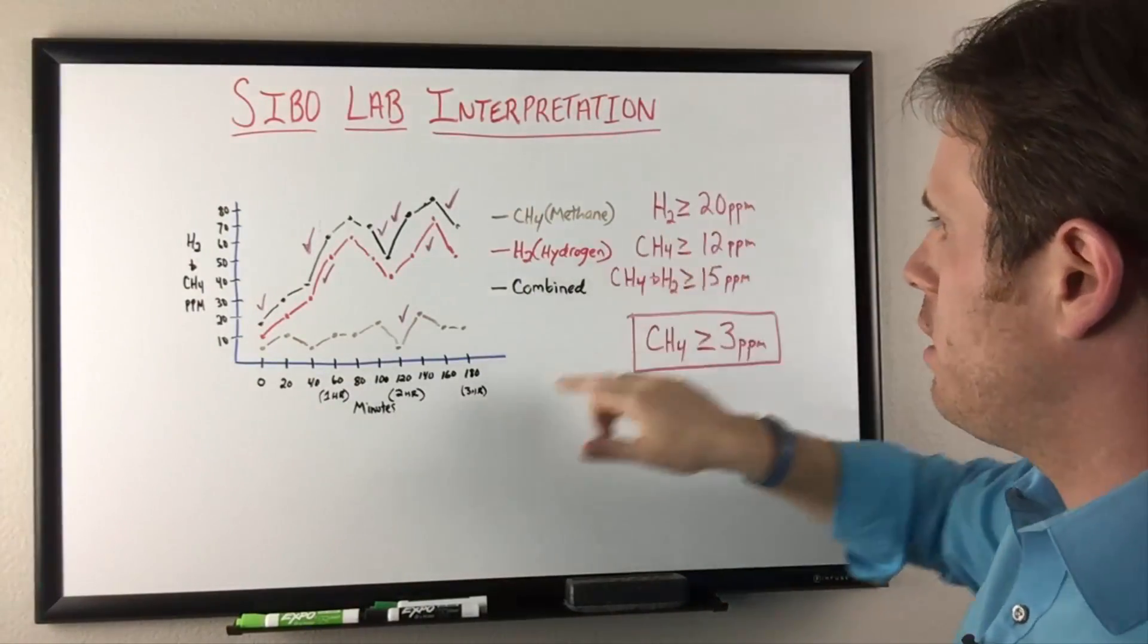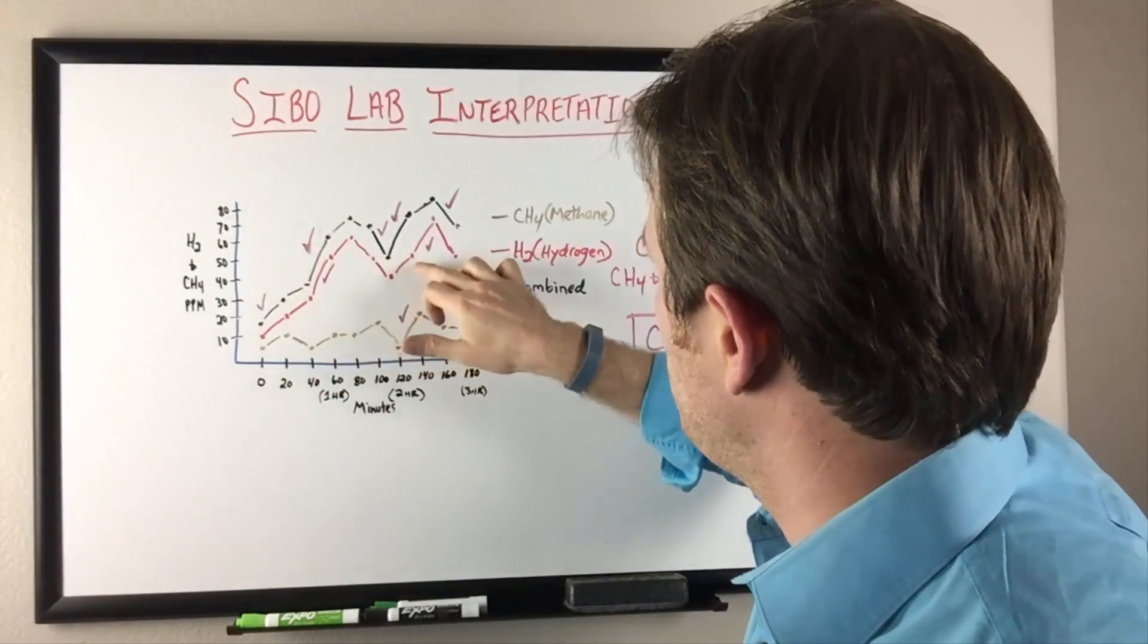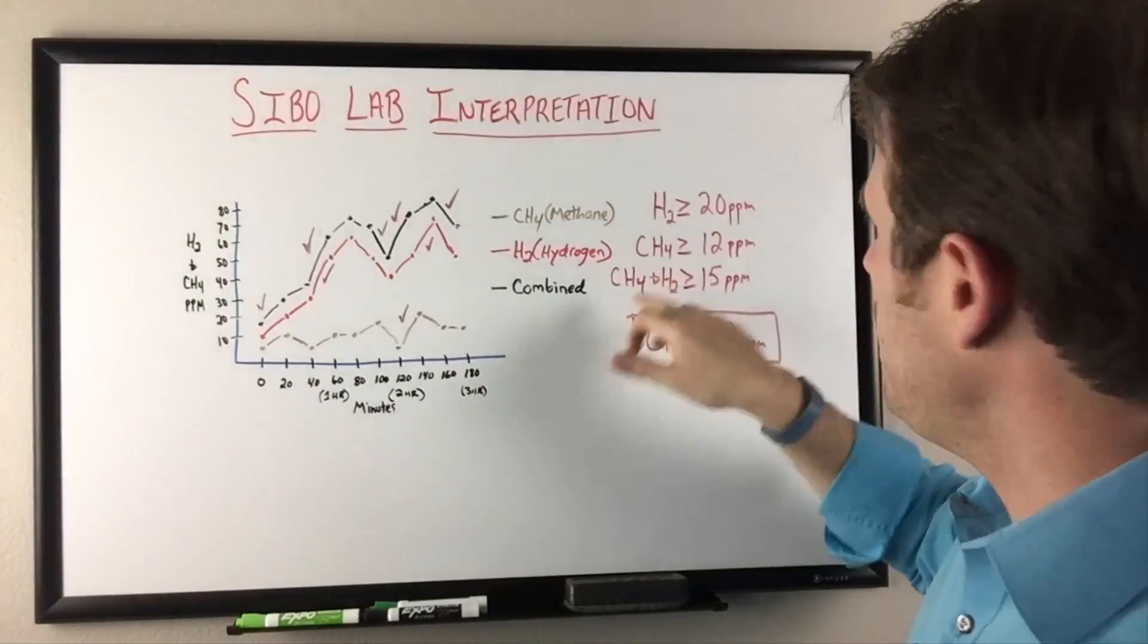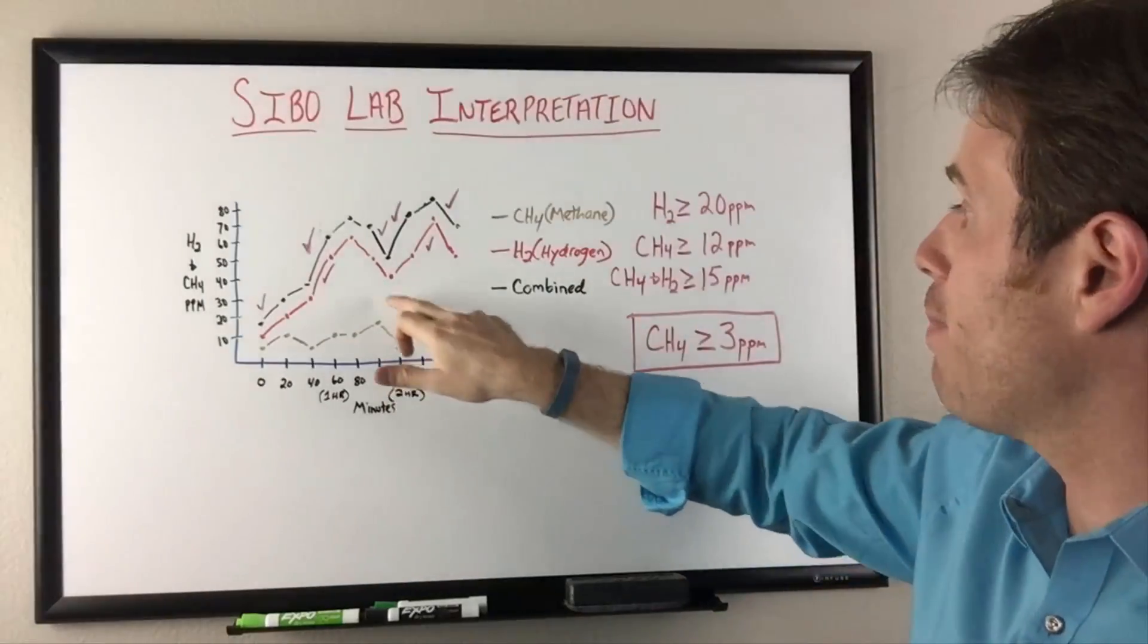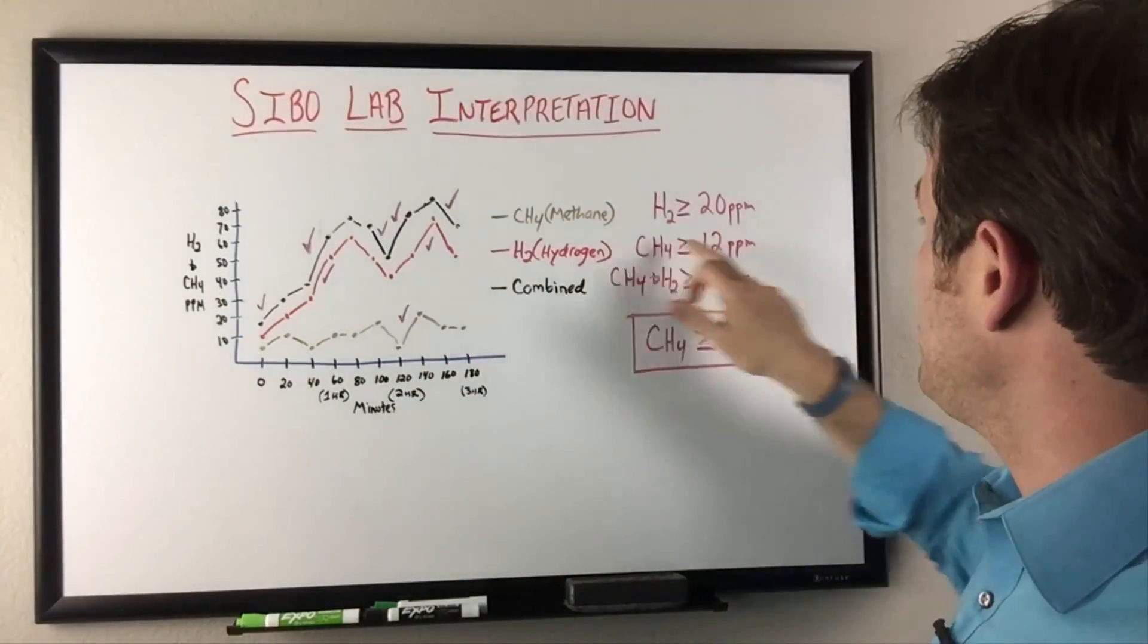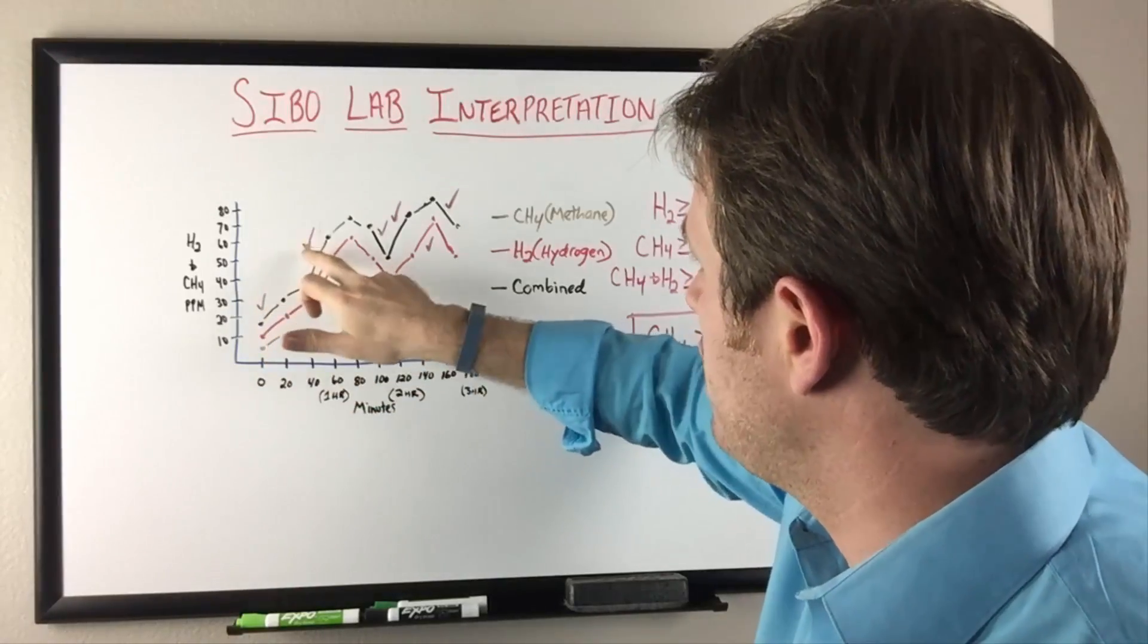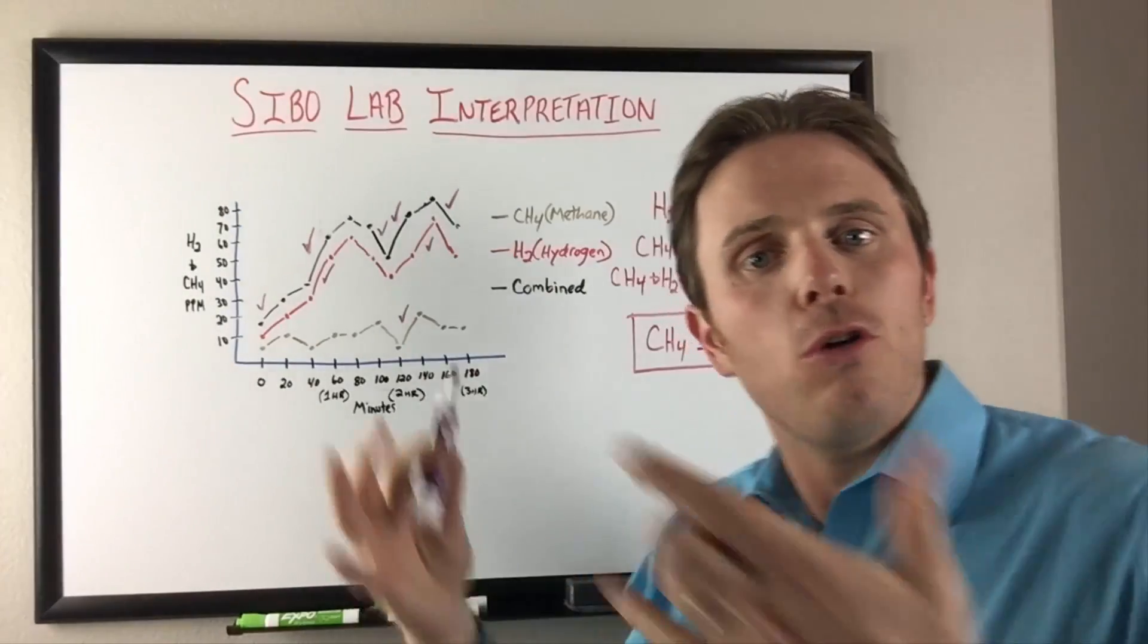We have our hydrogen greater than 20, so you can see the jumps here, from here to here, and then here to here, that's 20. Positive on the hydrogen. Methane, right here, you can see the jump from there to there, that's greater than 12, that's positive on the methane. And then you can see the combo here, greater than 15. We have it here, we have it here, we have it here, here, and there. So those are your positive readings.